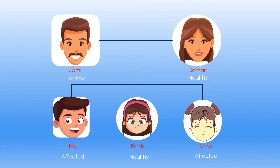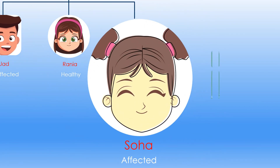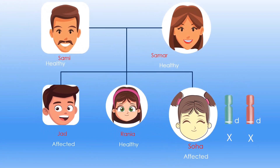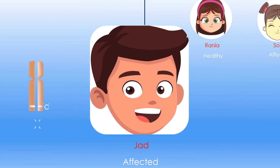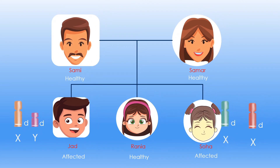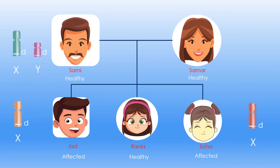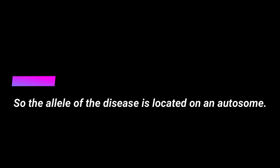If the allele of the disease were located on the homologous segment of X and Y, Saha should have genotype X^D X^D and her brother Jad should have genotype X^D Y^D. This means both inherited the disease allele from their father, who should then have genotype X^D Y^D and consequently be affected. But the pedigree shows he is normal, so this is not the case. Therefore, the allele of the disease is located on an autosome.